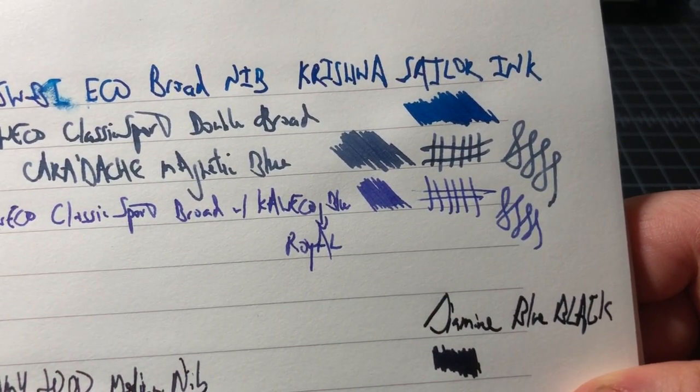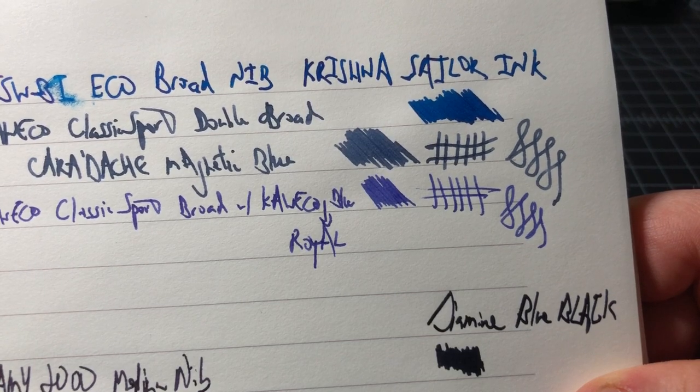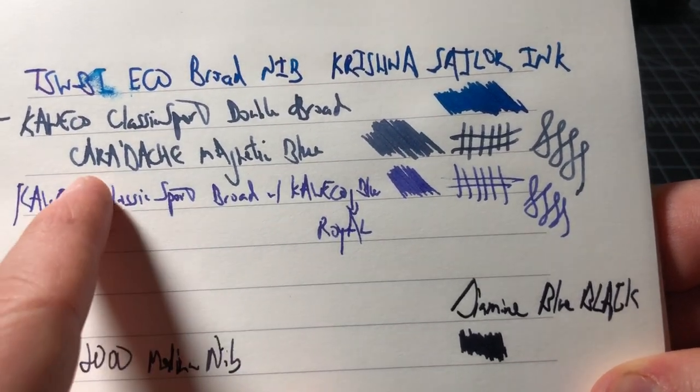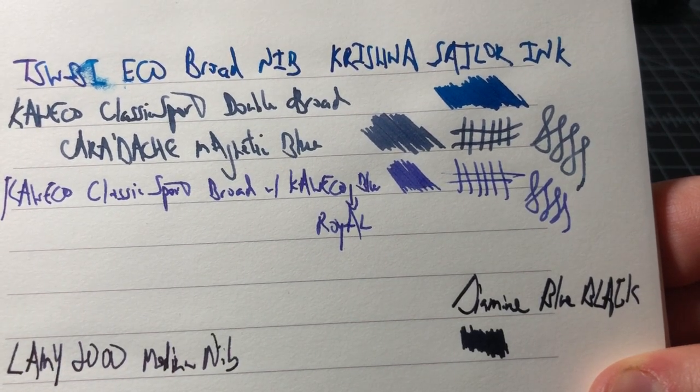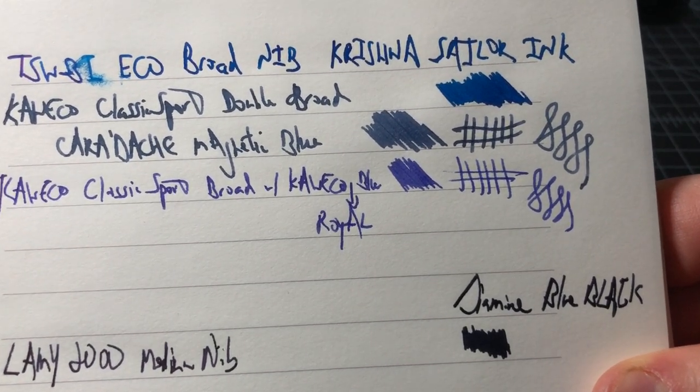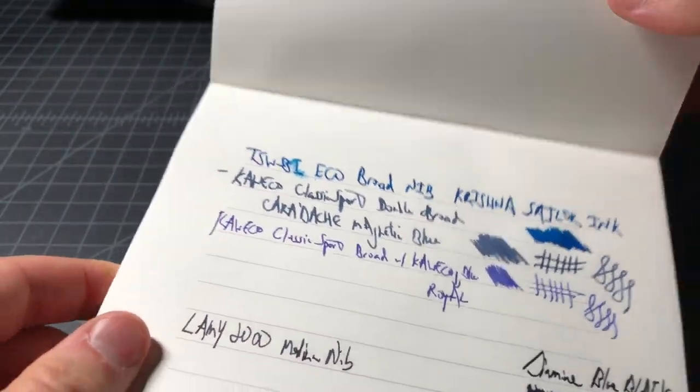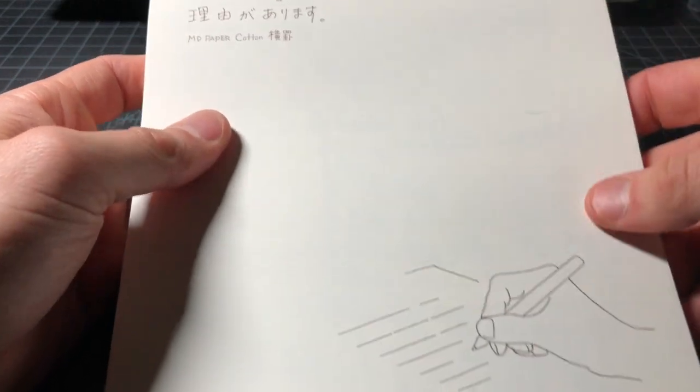Not a lot of flex there. Both these nibs are quite stiff. So I would not expect to see a lot of line variation. But what you get when using a broad or definitely the double broad is you see ink variation just because you're putting down a lot of ink. So if you use a nice paper, it does some interesting things.